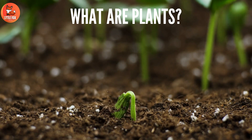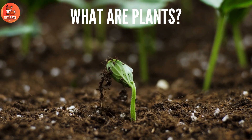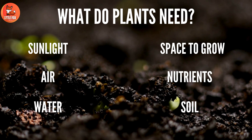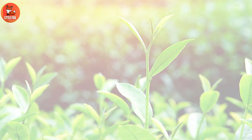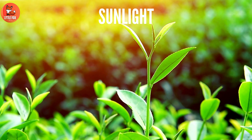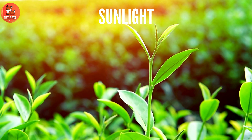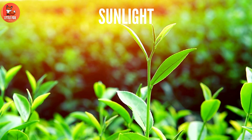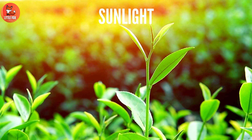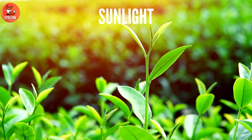They have special parts that help them survive and thrive. What do plants need? Sunlight. Plants require sunlight as their energy source for photosynthesis, a process which converts carbon dioxide and water into glucose.